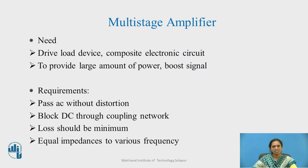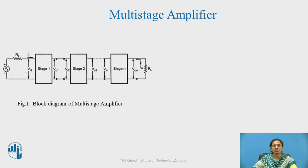While passing the signal, impedance matching is a very important factor. Therefore, equal impedances at the various frequencies must be obtained. Block figure one shows the block diagram for the multistage amplifier, where we are connecting the output of the first stage to the input of the next stage. This will be carried forward till the number of stages — here, stage N is shown.